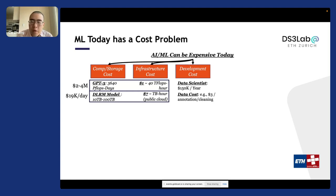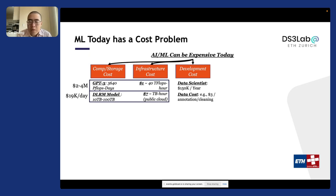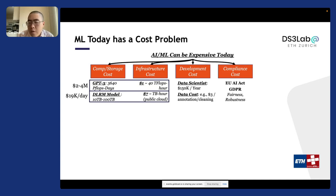There's a cost for development — hiring someone to build your application is expensive. The cost of data is also non-trivial; it can easily cost a couple of dollars just to allocate and clean something. People also care about things beyond accuracy and quality, such as fairness and robustness, which are very important for applications, and there's also the cost of being compliant with regulation.